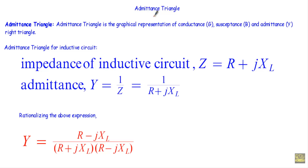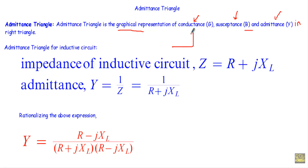In this video I will talk about the admittance triangle. I will show you the admittance triangle of an inductive circuit and a capacitive circuit. The admittance triangle is the graphical representation of conductance G, susceptance B, and admittance Y in a right triangle — where conductance G is on the horizontal axis, susceptance B on the vertical axis, and admittance Y along the hypotenuse.